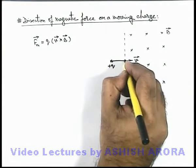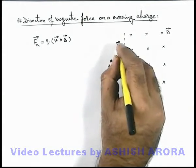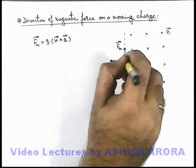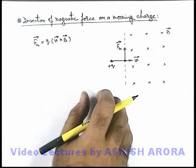So as soon as the charge enters into the magnetic field it experiences the magnetic force vector in the direction perpendicular to both v vector and b vector, and the direction is given by right-hand thumb rule, that is cross product of v and b vector.